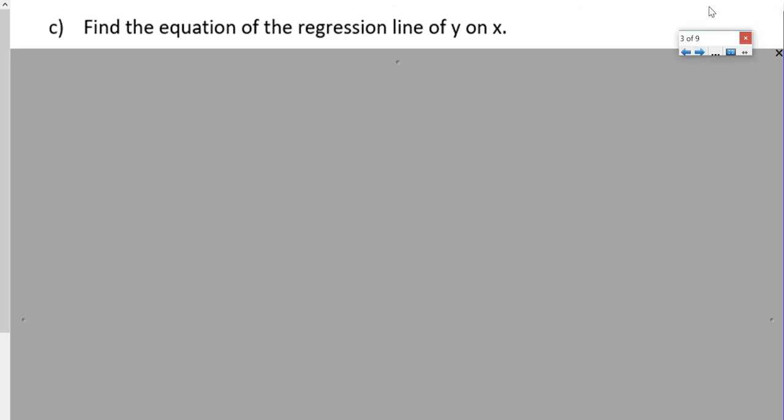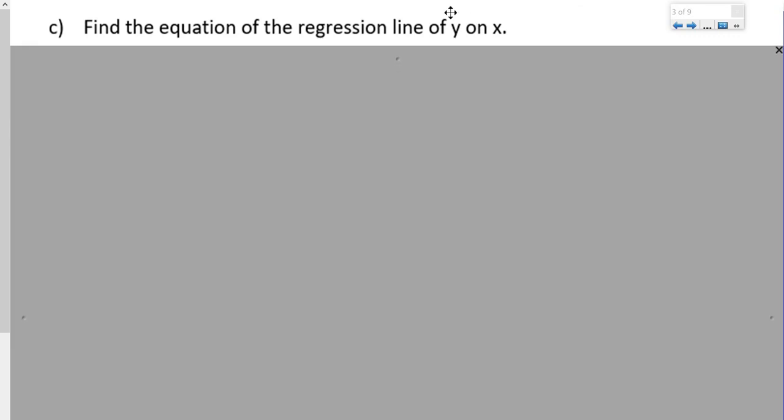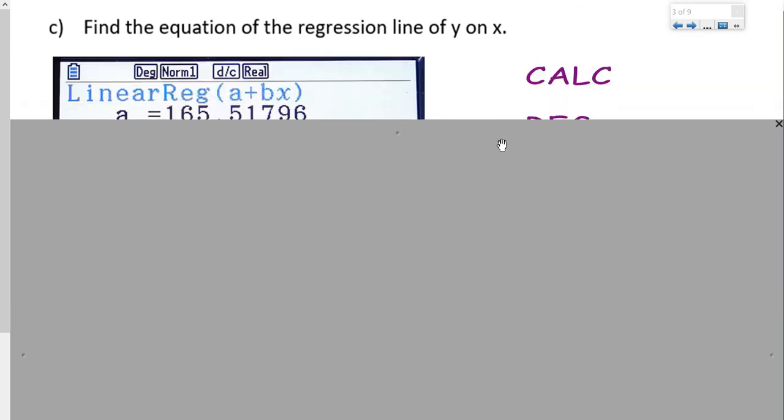Finally, the equation of the regression line of y on x. Y was our response variable or our dependent variable. X was our explanatory variable or our independent variable. So that's why it's y on x, and we always do it that way around.